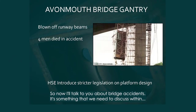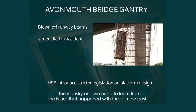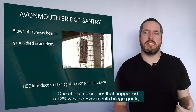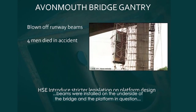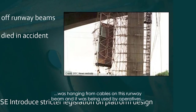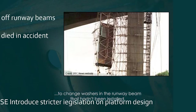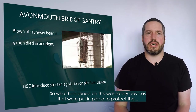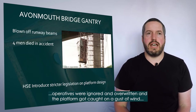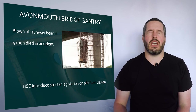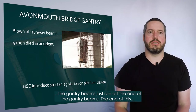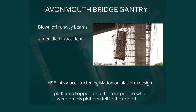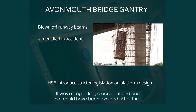Now I'm going to talk about bridge accidents — something we need to discuss within the industry and learn from. One of the major ones was the 1999 Avon Mount Bridge gantry collapse on the M5. Runway beams were installed on the underside of the bridge and the platform was hanging from cables on this runway beam, being used by operatives to change washers in the runway beam. Safety devices put in place to protect the operatives were ignored and overridden. The platform caught a gust of wind, blew forward, and the trolleys connected to the gantry beams ran off the end. The end of the platform dropped and the four people on it fell to their deaths. It was a tragic accident and one that could have been avoided.